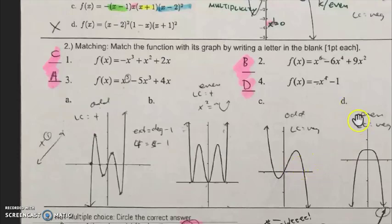And the last graph, even, because it starts down, ends down, and the leading coefficient is negative. Another one that is an even and negative would be choice four, which would be D. Those were one point apiece.